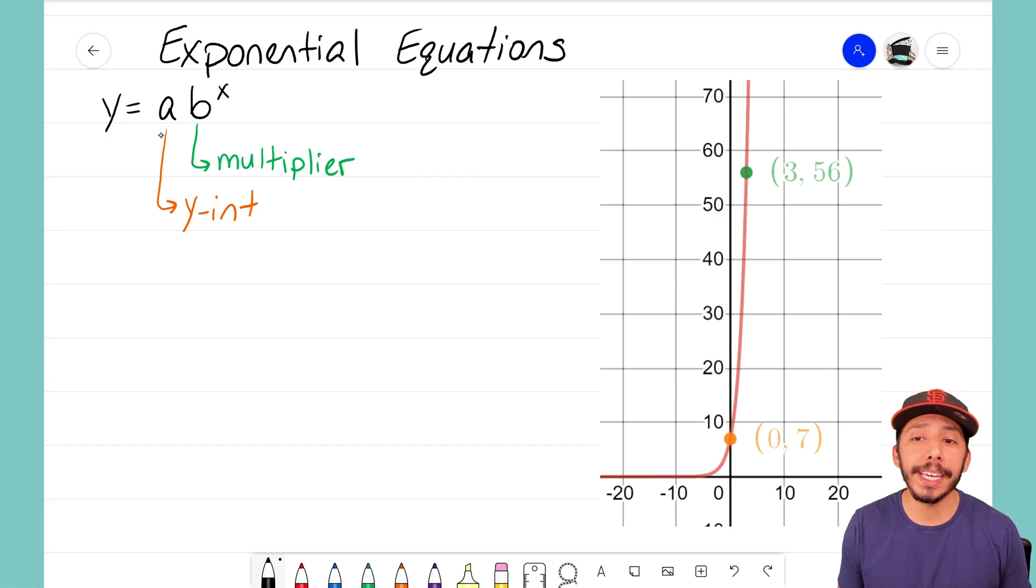Remember a represents our y-intercept or our starting point and b represents our multiplier or our growth rate. So we want to see can we make an equation that will match those two points.